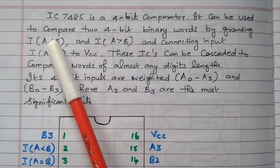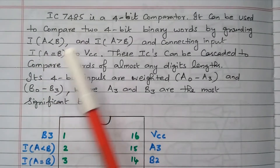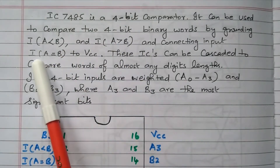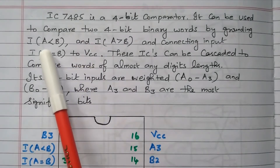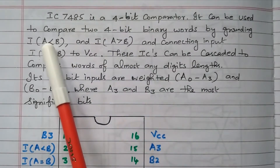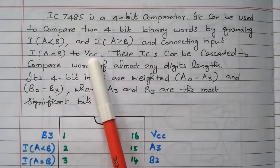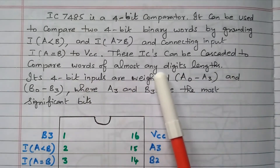When cascading, the output of the first IC is given to the input of the second IC. If we are using only one IC, the A-less-than-B and A-greater-than-B cascade inputs are grounded, and the A-equal-to-B input is connected to VCC. These ICs can be cascaded to compare words of almost any digit length.